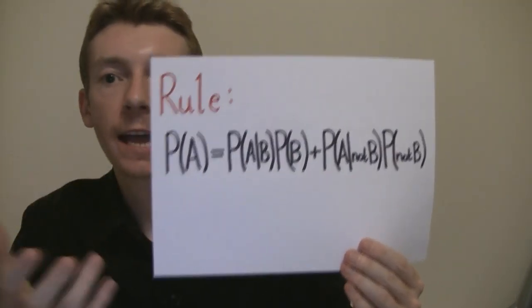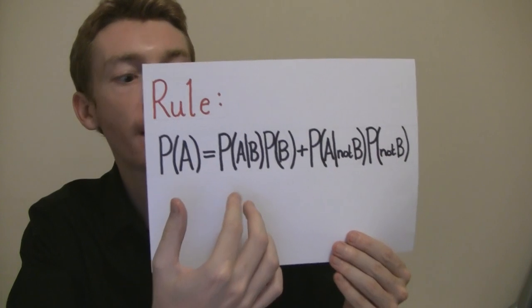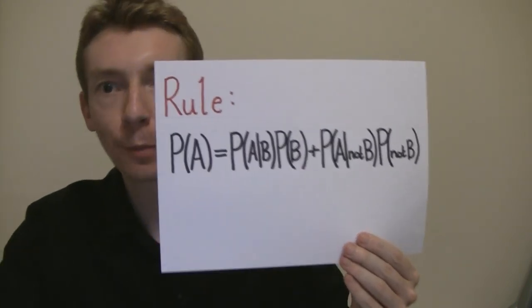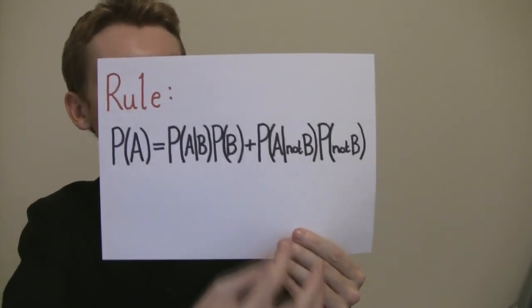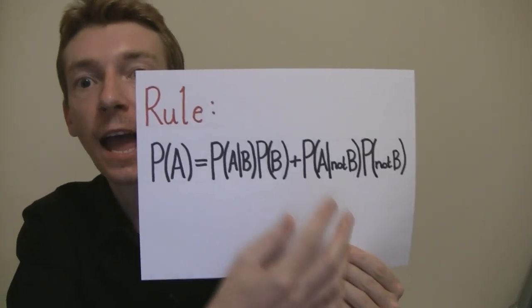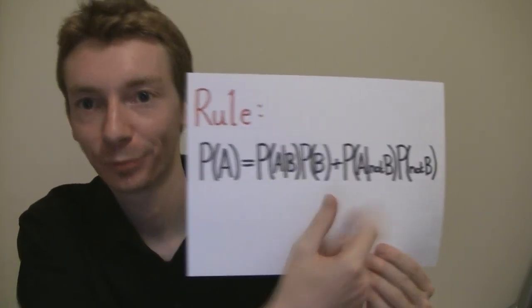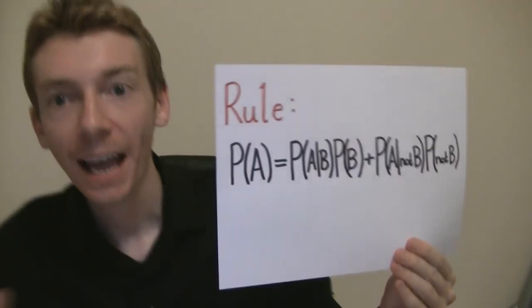We're going to use a rule of probability. It says: the probability of A is the probability of A given B, times the probability of B, plus the probability of A given not B, times the probability of not B.